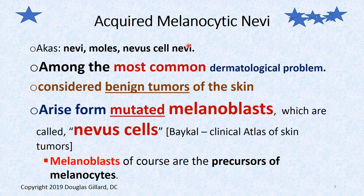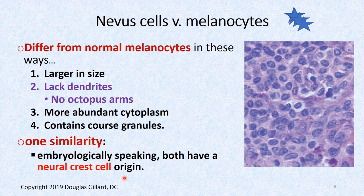These are the most common dermatological problem on the planet, although they're not really a problem usually. Some of these have been with you since birth and they're really no big deal. But they are considered tumors — benign tumors of the skin. Typically they arise from mutated melanoblasts, and these melanoblasts are also more commonly known as nevus cells. A melanoblast is a precursor cell — it's a precursor to the melanocytes, those cute little octopus-like cells.